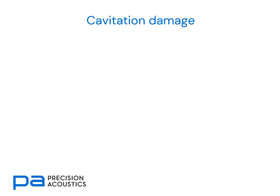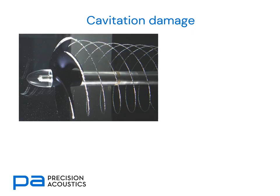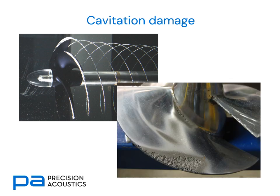Cavitation damage is therefore a significant issue. If we look at a standard propeller here, we can see a number of vortices shedding from the tips of the propeller. In these situations, the shearing forces through the water caused by the propeller's motion are what's inducing the tensional phase in bubbles, and not ultrasonically, but nonetheless it illustrates the point well. When we examine the leading and trailing edges of propellers that have been subject to cavitation damage, we can see that the stainless steel is considerably pitted as a result of the water jets arising from those collapsing bubbles.